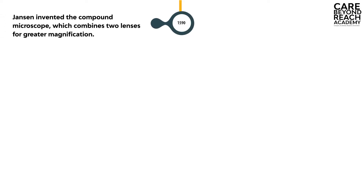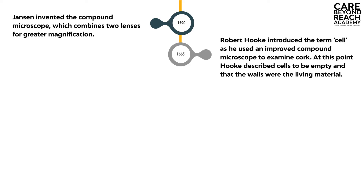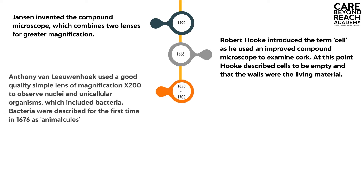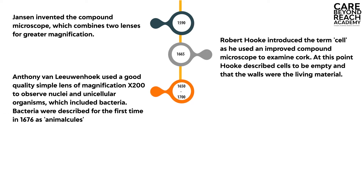In 1590, Johnson invented the compound microscope, which combines two lenses for greater magnification. In 1665, Robert Hooke introduced the term 'cell.' He used an improved compound microscope when he examined cork. Anthony Van Leeuwenhoek used a good quality simple lens of magnification times 200 to observe nuclear and unicellular organisms, which included bacteria. He did this in 1650.